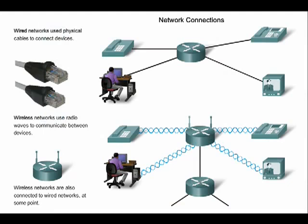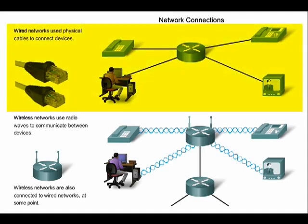The devices in a network must be connected for the network to function. Network connections can be wired or wireless. With wired connections, like the network in this graphic, the medium is either copper, which carries electrical signals, or optical fiber, which carries light signals.